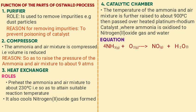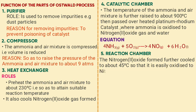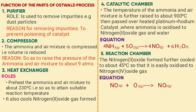To balance the catalytic chamber equation: 4 ammonia plus 5 oxygen gives 4 nitrogen monoxide and 6 water. In the reaction chamber, nitrogen monoxide is further cooled to a temperature below 45 degrees Celsius so that it is easily oxidized to nitrogen dioxide. The equation in the reaction chamber is: nitrogen monoxide plus oxygen gives nitrogen dioxide.